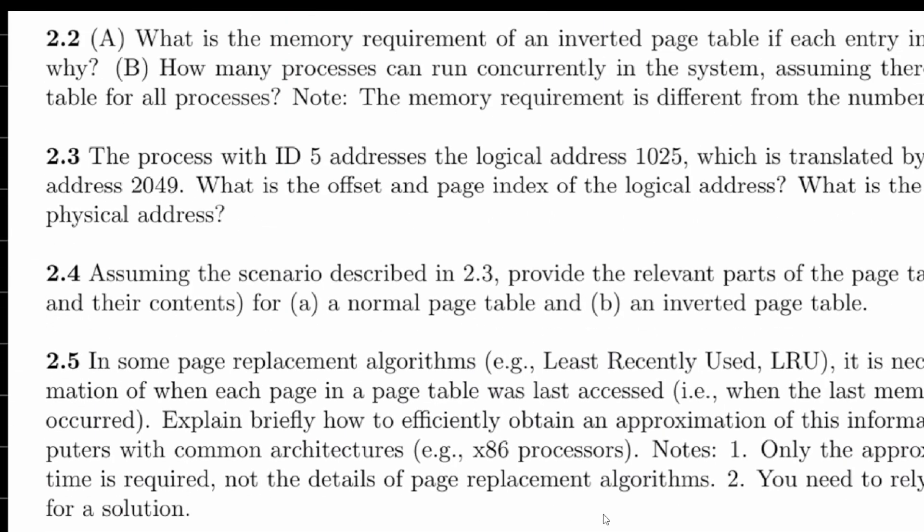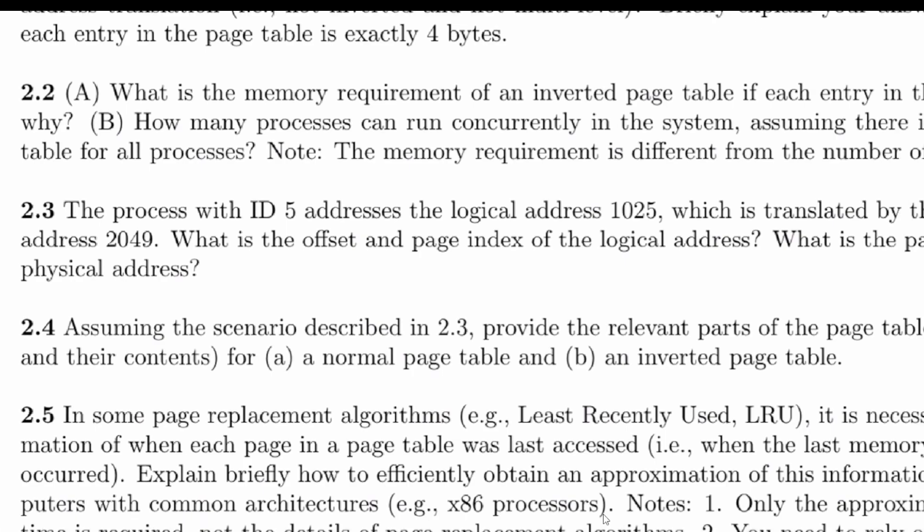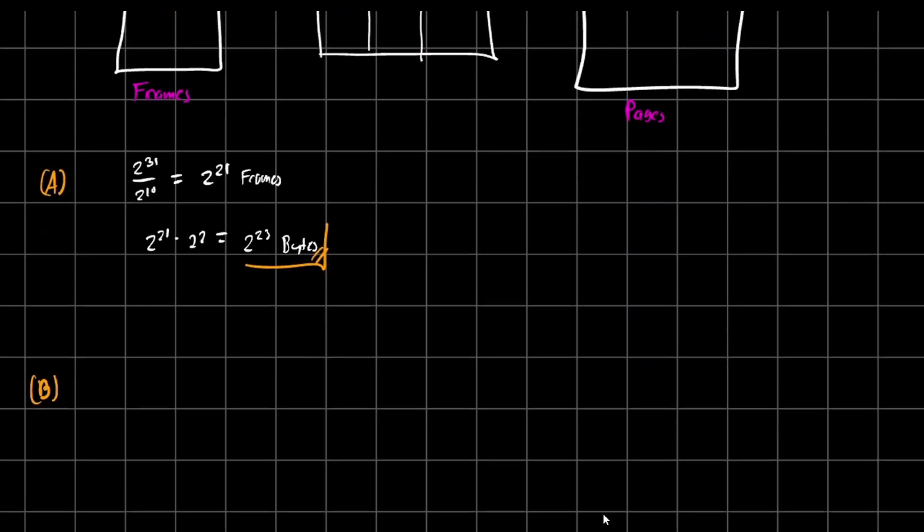How many programs can we run? Well, it just suffices by taking, if each entry is 2 to the 10 and I have 2 to the 21 frames, I technically have 2 to the 21 frames available for each process.